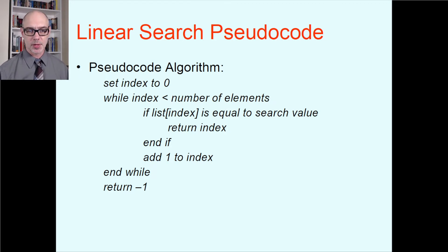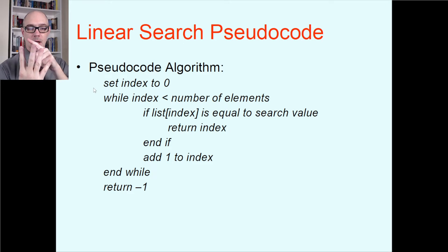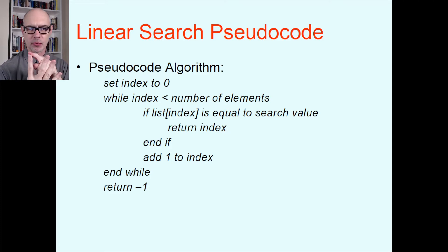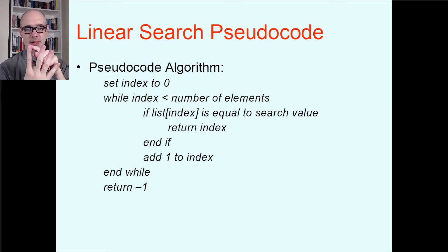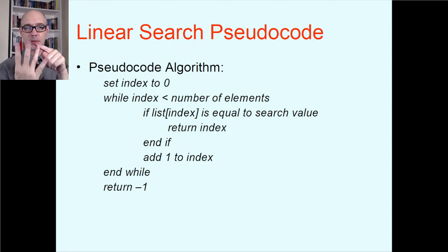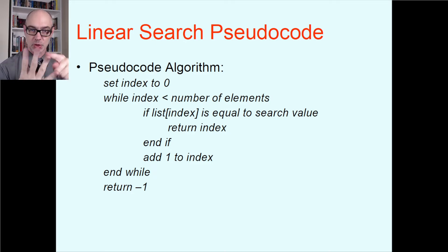For linear search, the pseudocode says you'll have an index variable starting at zero. The loop keeps going as long as the index is less than the number of elements. Each iteration checks whether list[index] equals the value you're searching for — if so, return that index. Otherwise, add one to index and inspect the next element. If you go all the way through the entire array without finding it, you drop out of the loop and return negative one as the signal that what you're searching for is simply not in this list.